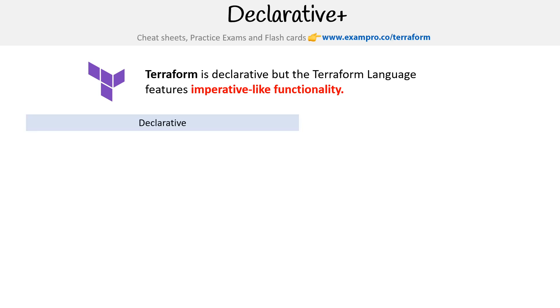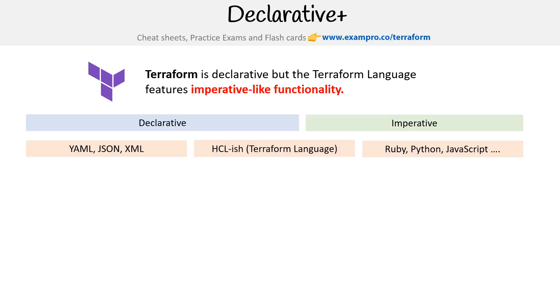So you have declarative and imperative, and then the three types. You have YAML, JSON, XML; you have Terraform language, which actually utilizes HCL underneath; and then you have programming languages on the right-hand side, like Ruby, Python, JavaScript, and so on.